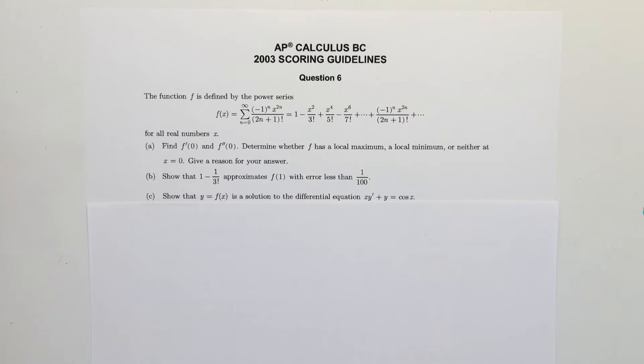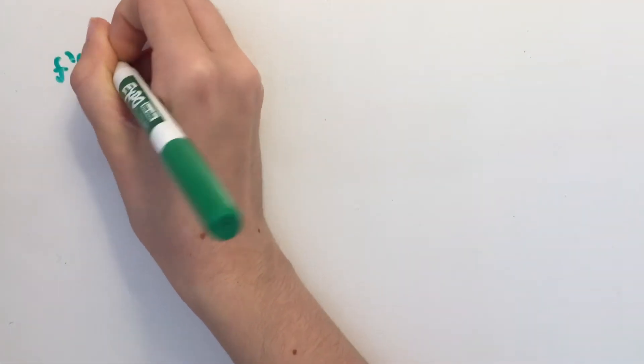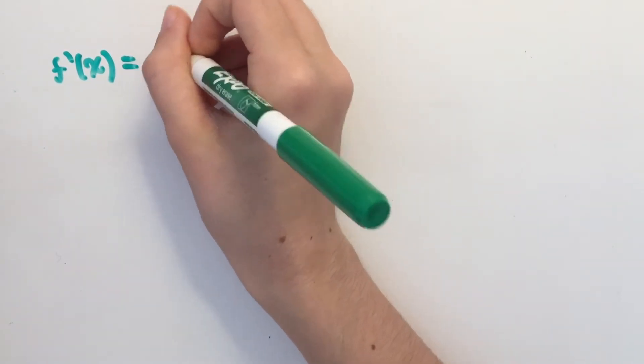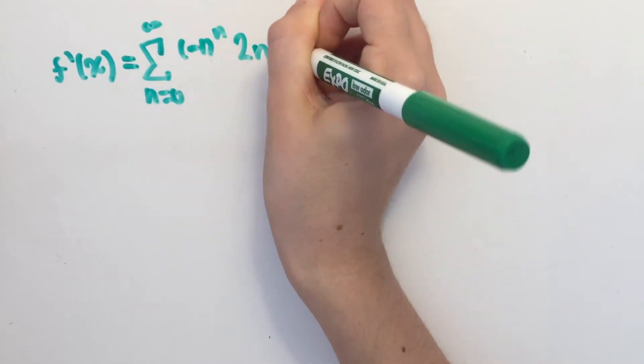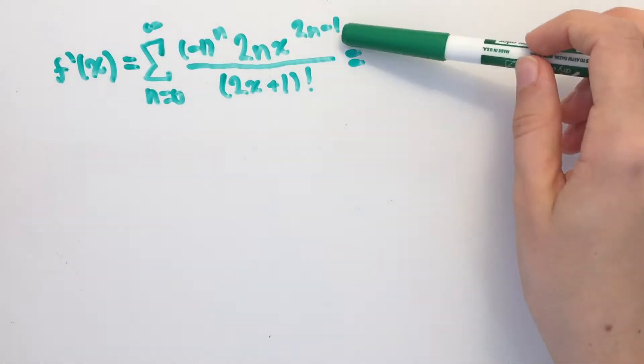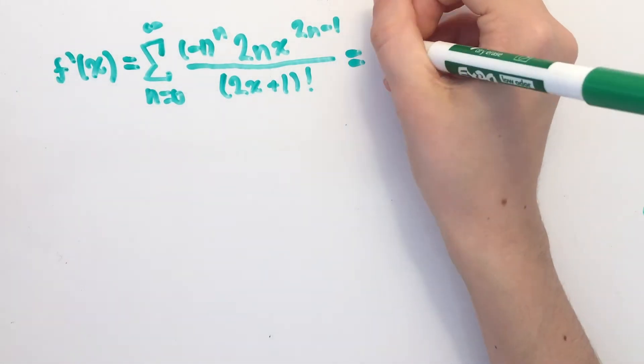The function f is defined by the power series f of x for all real numbers x. Part A tells us to find f prime of 0 and f prime prime of 0. That is the derivative of f at 0 and the second derivative of f at 0. To find f prime of 0, I first found f prime of x. I differentiated like I would for any other power series. I found the general term by using power rule, and then I found the expanded form.